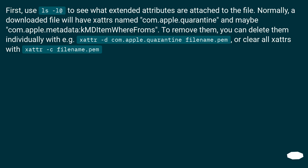First, use `ls -l@` to see what extended attributes are attached to the file. Normally, a downloaded file will have extended attributes named com.apple.quarantine and maybe com.apple.metadata:wherefroms. To remove them,